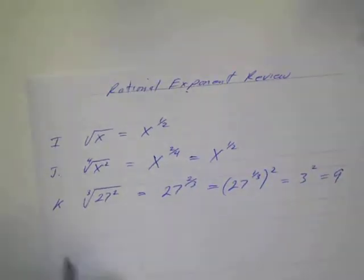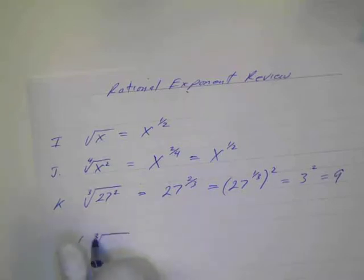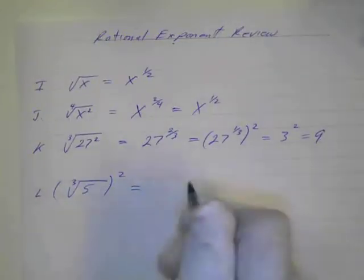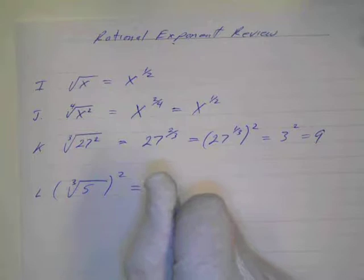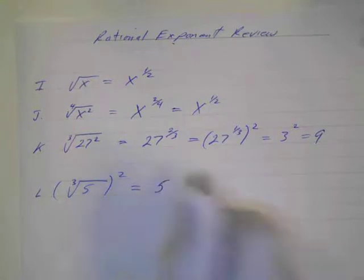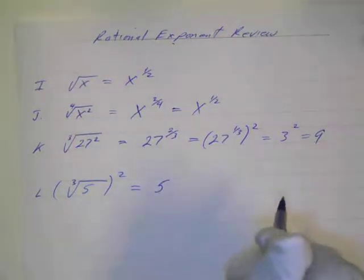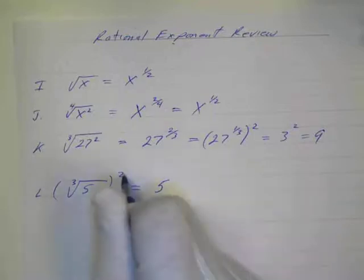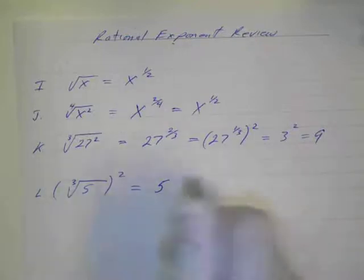Okay, and letter l. The cube root of 5 squared. So again, our power goes in the numerator, and the root goes in the denominator, so it would be 5 to the one-third power.